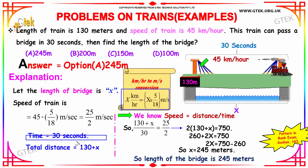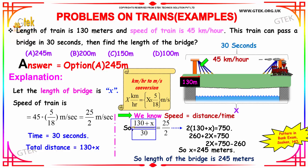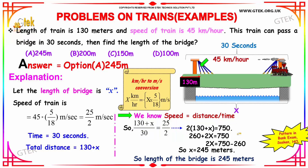The total distance covered is 130 meters (the length of the train) plus x (the length of the bridge). Using speed equals distance divided by time: distance is 130 plus x, divided by 30 seconds, equals the speed 25 divided by 2. Solving this equation gives 2 times (130 plus x) equals 750.